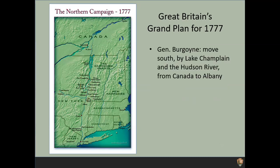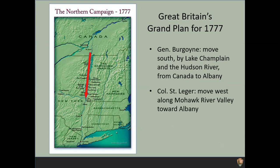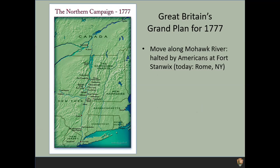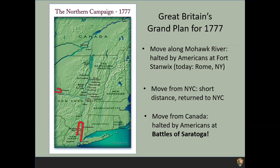General John Burgoyne would move south by the Lake Champlain and Hudson River Valley from Canada to Albany — there's the red arrow on the map. Colonel Barry St. Leger moved from western New York along the Mohawk River Valley towards Albany, and General Sir William Howe, and later his second-in-command General Clinton, moved north from New York City. The move along the Mohawk River Valley didn't go well — it was halted at Fort Stanwix in Rome, New York. The move north from New York City didn't get far either. And that move south out of Canada was halted by the Americans at the Battle of Saratoga, shown with the little red explosion icon on the map.